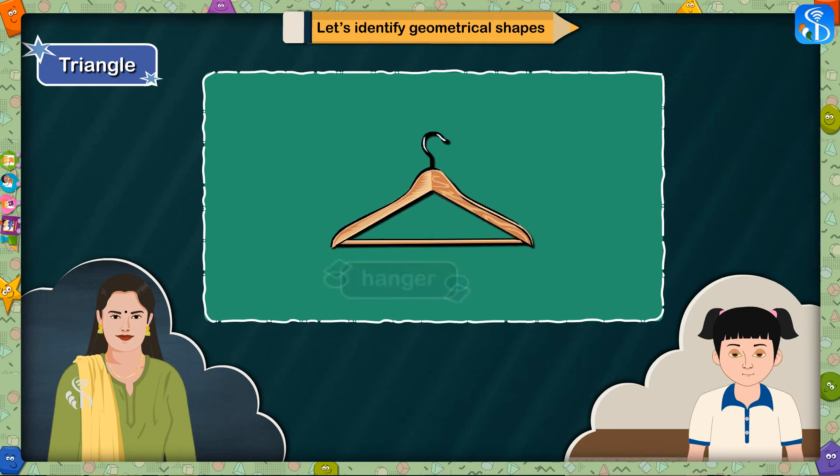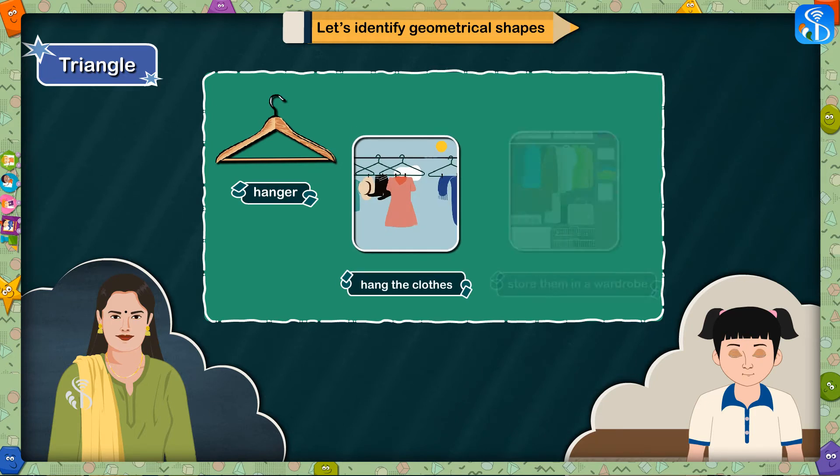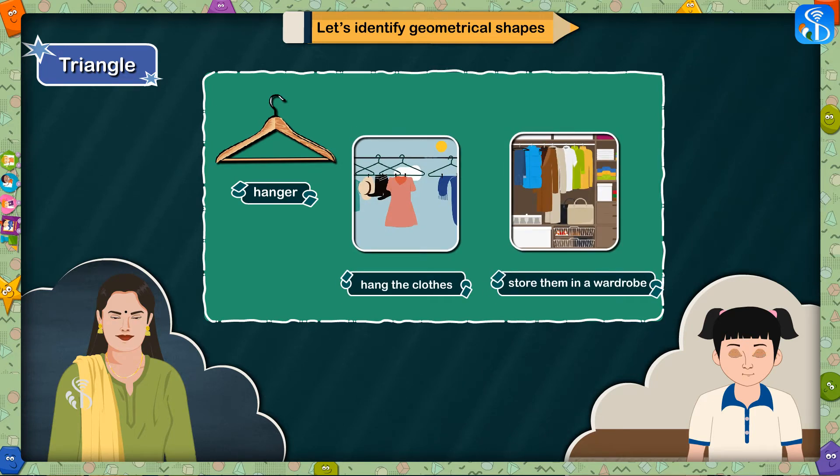Triangle. What is this picture about? It's a hanger. That's right. A hanger is used to hang the clothes for drying or to store them in a wardrobe.